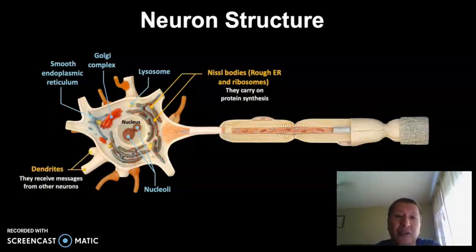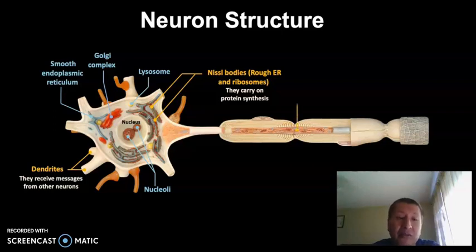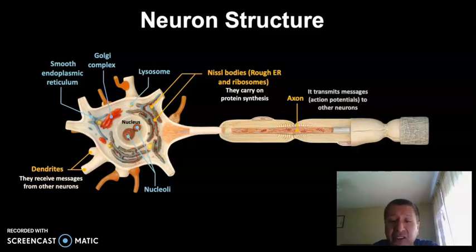It also has dendrites, which are the areas where the neuron is going to receive the stimulus from another neuron. It has the axon, which is going to transfer the action potential to another neuron.